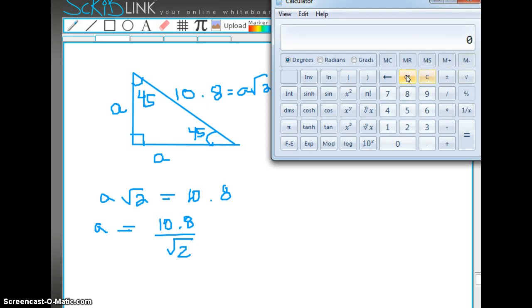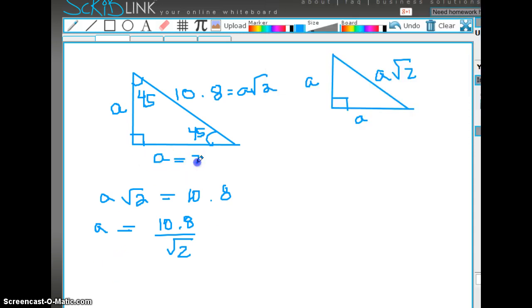10.8 divided by the square root of 2 is equal to 7.64. So this is equal to 7.64. Let's try this doing the SOH CAH TOA as well. See which way you prefer. Both are good.